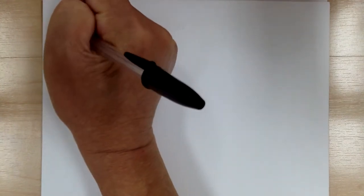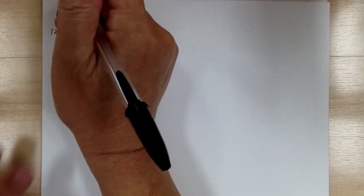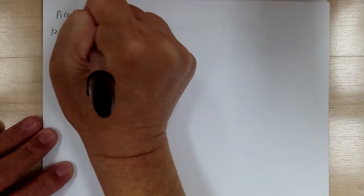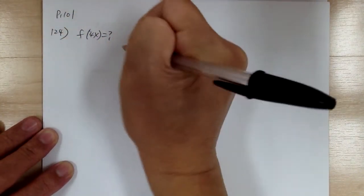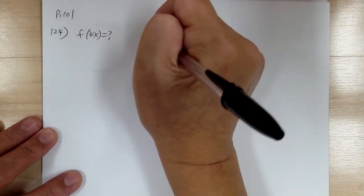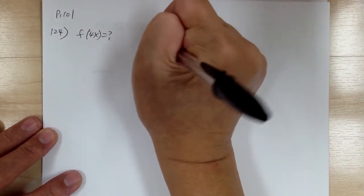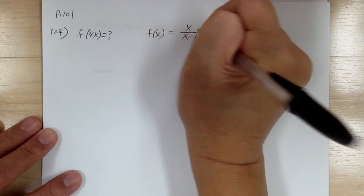Let's go to page 101 and start with number 124. Find an expression for f of 4x in terms of f of x, given that f of x equals x over x minus 1.